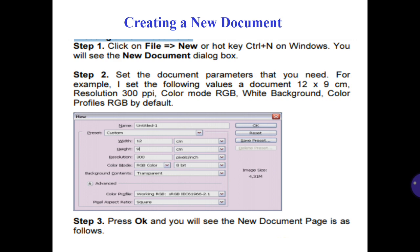For example, I set the following values: document size 12 by 9 cm, resolution 300 ppi, color mode RGB, white background, and color profile RGB by default. You can see these parameters in the picture.